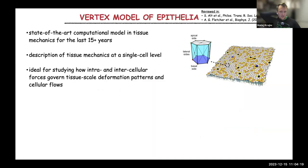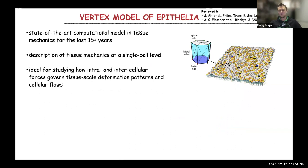Epithelia are one of four types of animal tissues. They usually cover organs. Here I have a sketch of a single-layer epithelial tissue — epithelial tissues can also be multilayered, like in skin. These are basically surface packings of polyhedral cells, where every polyhedron is a cell. They don't need to be flat; these tissues can be curved. Every cell in the vertex model is described by a polyhedron, and its shape is parametrized by positions of vertices.